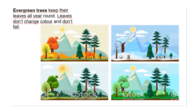In summer, the evergreen trees are green. In autumn, they are green. And in winter, they are green. They don't lose their leaves — they are green all year round.